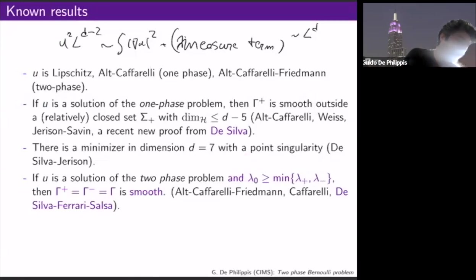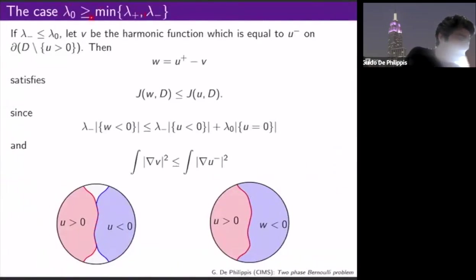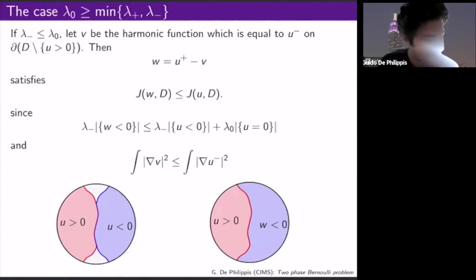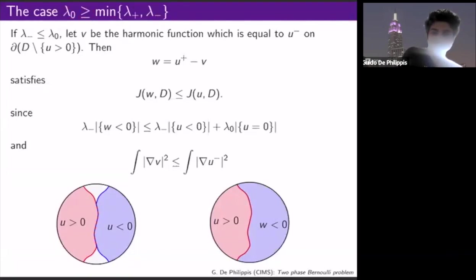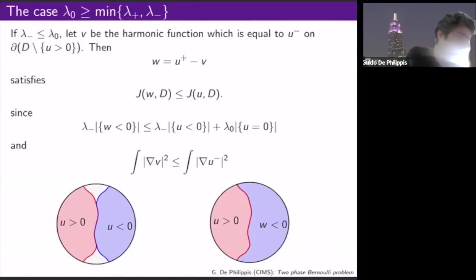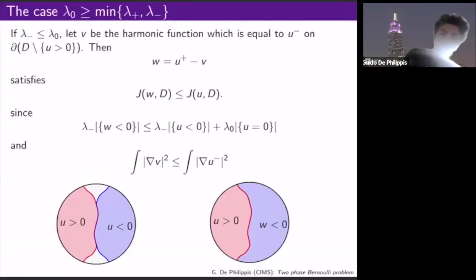Why is this situation more tractable? Assume lambda zero is at least the minimum of lambda plus and lambda minus, say lambda minus ≤ lambda zero. One can show there is no reason for the minimizer to have a zero phase. Take the region where the minimizer is ≤ 0 and solve the Laplace equation with boundary data equal to U^- on that region. The resulting harmonic function V is strictly positive inside, by the maximum principle.